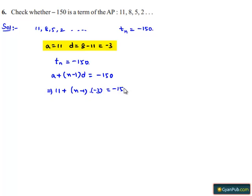Which implies N minus 1 into minus 3 is equal to minus 150 minus 11 that is nothing but minus 161.